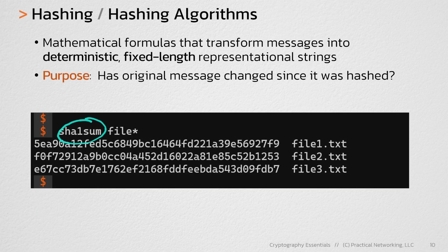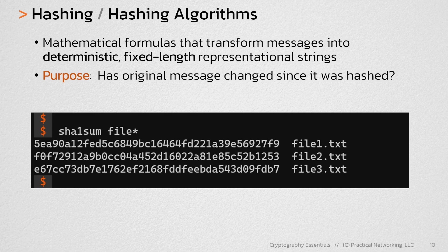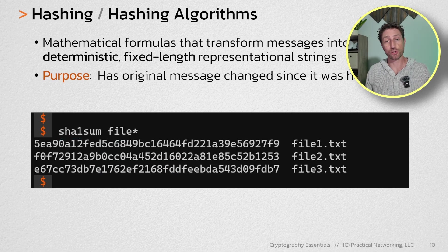Here, I'm using the SHA-1 utility, which is going to calculate the SHA-1 hash on every file in my current directory, which starts with the word file. In this particular instance, I have three files, file-1, file-2, and file-3, and each of them have a different SHA-1 hash. So that's an example of how you can use hashing algorithms on the files on your computer.